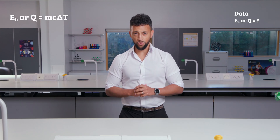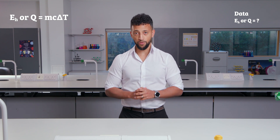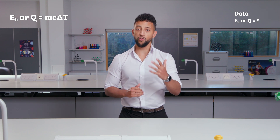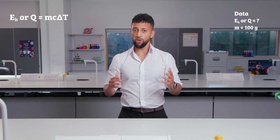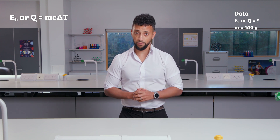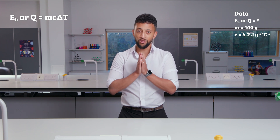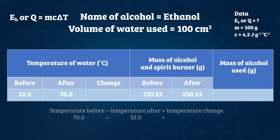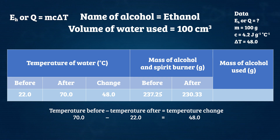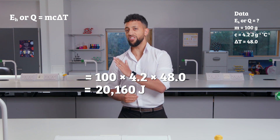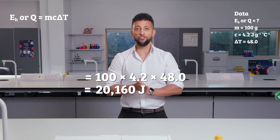Here is an example using my results. The volume of water used was 100 centimetres cubed. The density of water is 1 gram per centimetre cubed, so 1 gram of water has a volume of 1 centimetre cubed. You can therefore use 100 grams as the mass of water in this equation. The specific heat capacity of water is 4.2 joules per gram per degree Celsius. The temperature change was 70.0 minus 22.0 degrees Celsius, which equals 48.0 degrees Celsius. Therefore, heat energy change equals 100 times 4.2 times 48.0, which equals 20,160 joules.